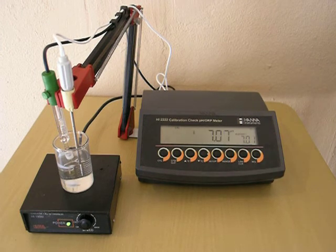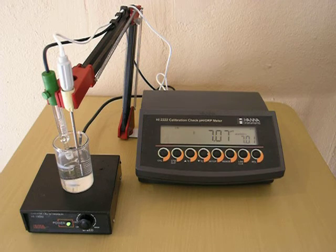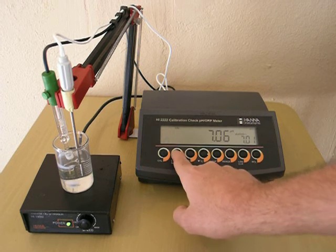Okay, we're already in pH calibration mode. We're looking for buffer 7.01. We're automatically temperature compensated. Our probe is in place. Once it's ready, you'll hear the beep and the screen will say confirm. Simply hit confirm.